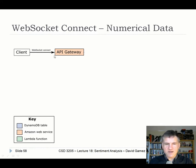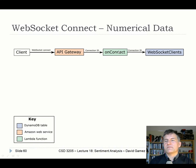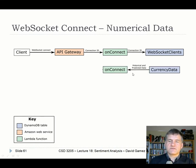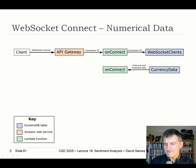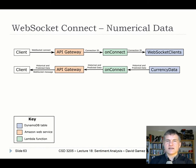Numerical data works similarly: the client makes a WebSocket connection, the on-connect function stores the connection ID and retrieves the last hundred historical and predicted data points from the currency data DynamoDB table, passing them back to the client. You could have different WebSocket APIs for numerical and sentiment data — how you structure this is up to you. The whole key is that data changes over time — you don't want the client pressing F5 to refresh. WebSockets allow the server to push new data to the client as it arrives, which is the dashboard functionality that services like CryptoWatch do so elegantly.